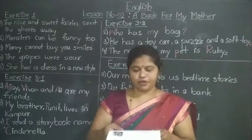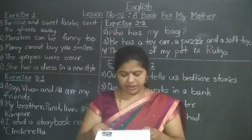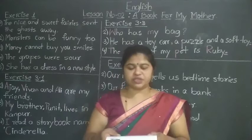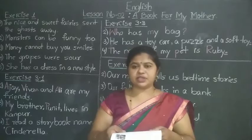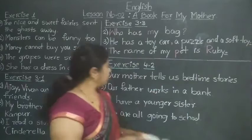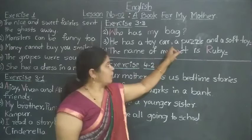Third: He has a toy car, a puzzle and a soft toy. There is a list of toys, so put a comma after the word car. At the end of the sentence they have given a comma — that's wrong. You should put a full stop.